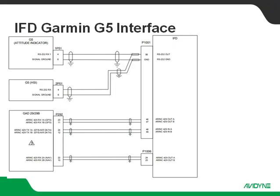Jumping right in, there are several variations of this interface. This particular variant uses the G5 system as an EFIS system, so you've got an attitude indicator and an HSI along with a GAD 29B. We're going to look at this one because it covers the most ground and should make any of the other variants of this interface a lot simpler.